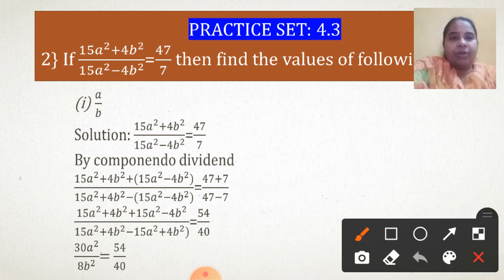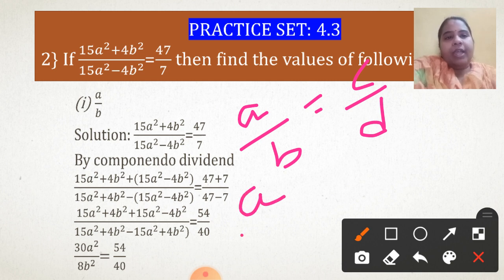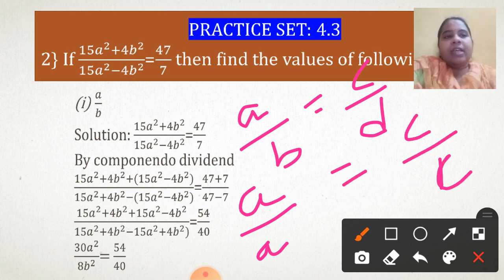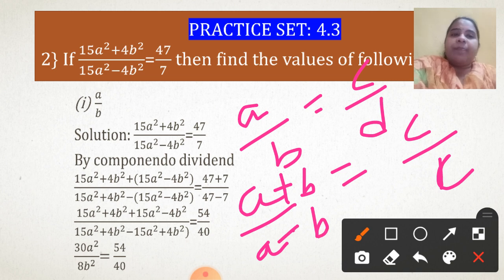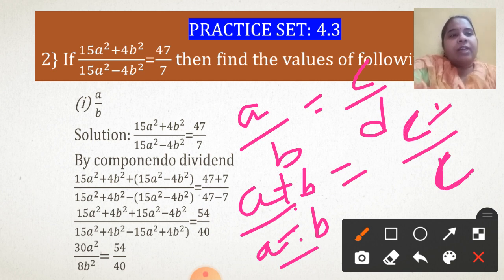Now let us quickly revise the property of Componendo-Dividendo. If I have equal ratio A upon B equal to C upon D and I want to use Componendo-Dividendo, I write the numerator twice — A and A — and the denominator twice — B and B — once adding and once subtracting the denominator. So this gives A plus B over A minus B. The same is done on the right side: write numerator C twice, then add and subtract the denominator D, giving C plus D over C minus D.